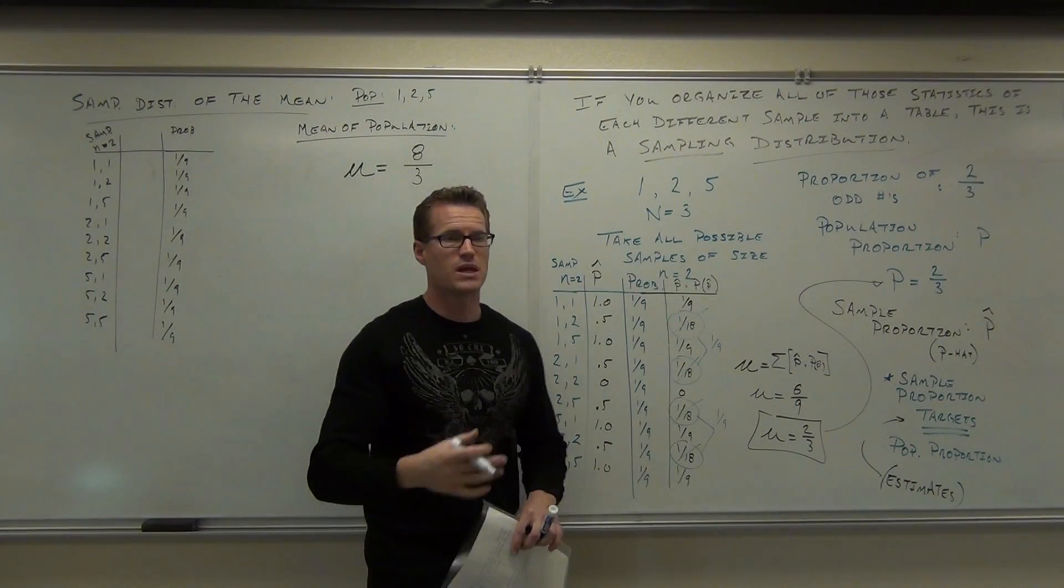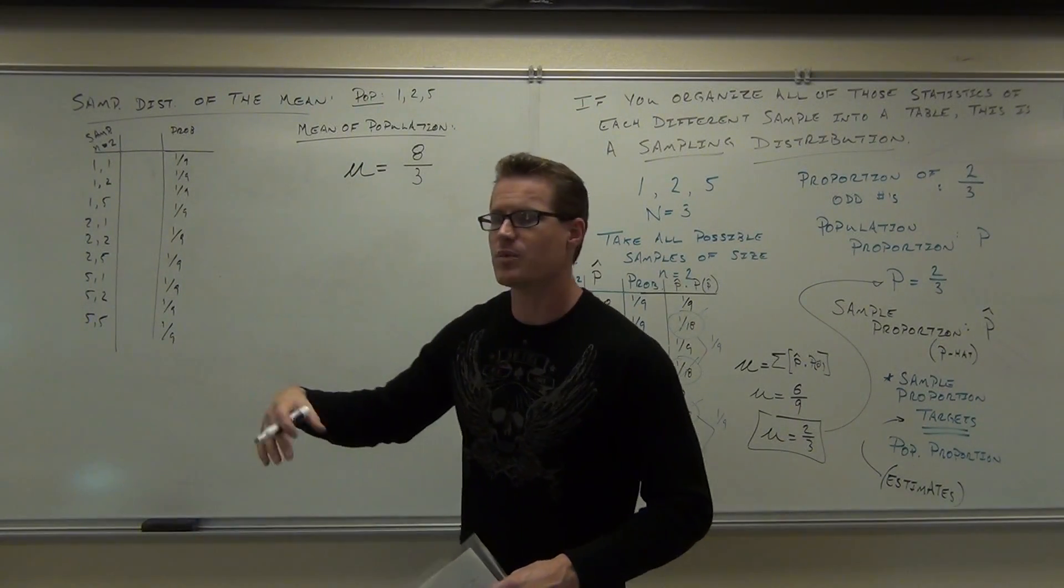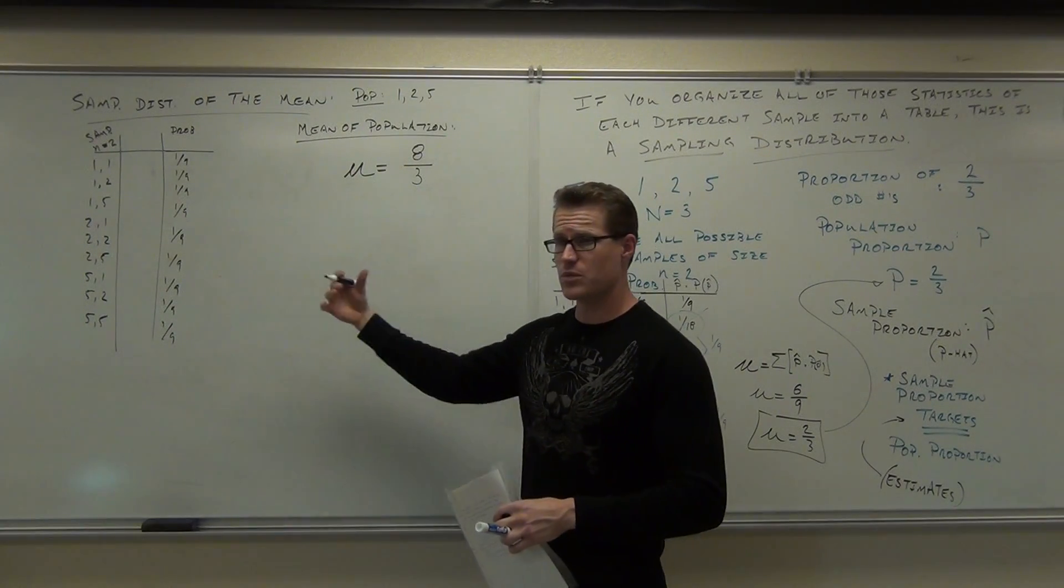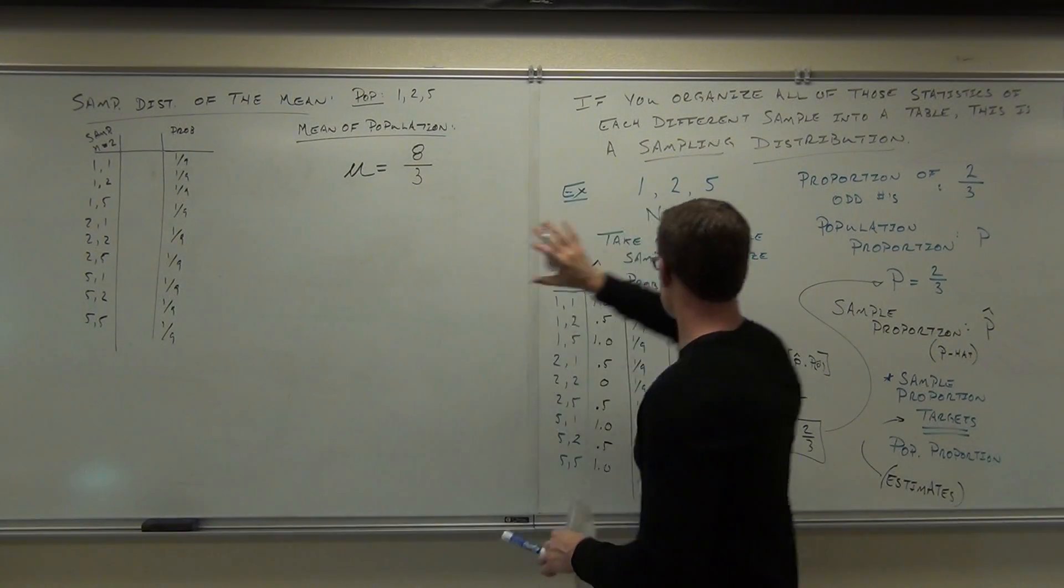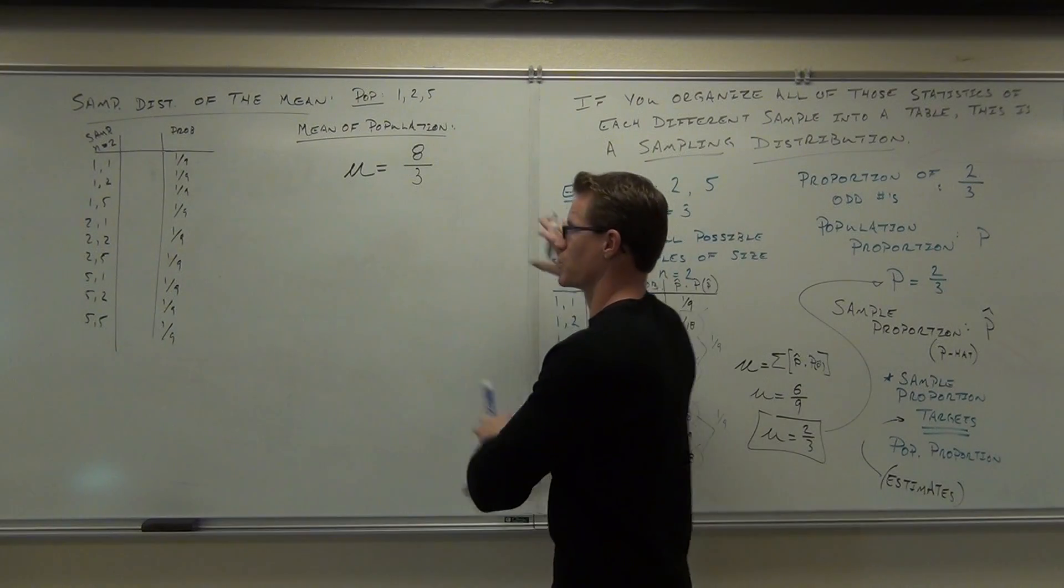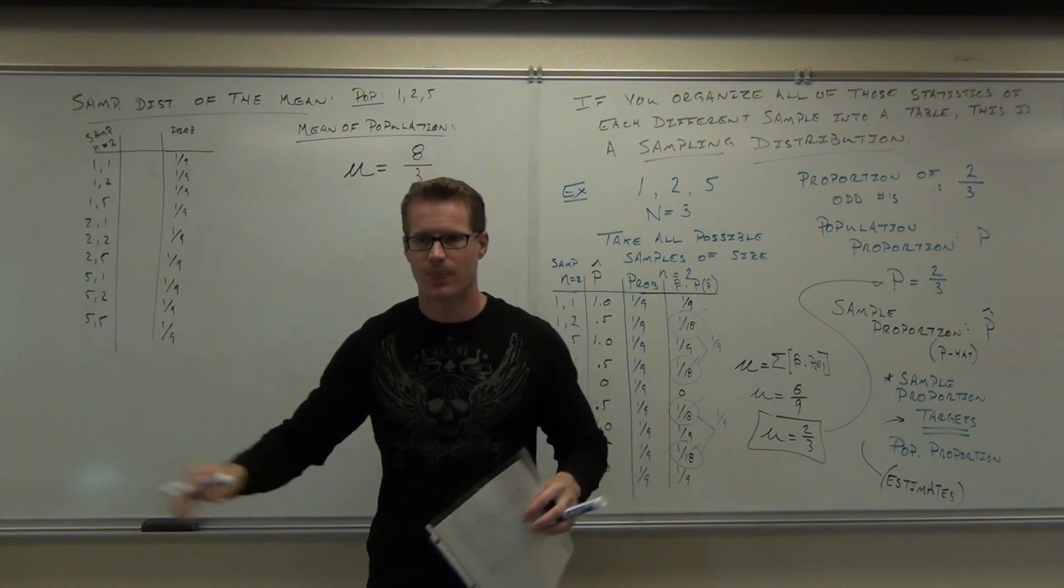The mean for the population here, our mean, is 8 thirds. You add them all up, you divide by the number you added, you okay that our mu is equal to 8 thirds? Remember, you are not dealing with p anymore.